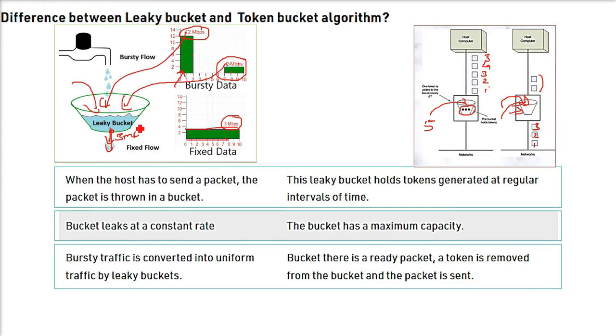In the leaky bucket, the bursty traffic or the data which is coming at some time at a higher rate, immensely high rate - the bursty traffic is converted into uniform traffic by the leaky buckets. In the token bucket, when there is a ready packet, a token is removed from the bucket and then the packet is sent.